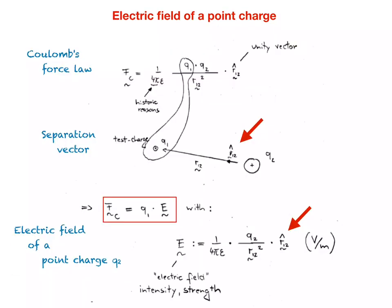Accepting Coulomb's law as experimentally proven, one can derive the electric field of a point charge. It requires a simple redefinition of the two charges: considering one — in this case Q2 — as the source charge, and Q1 as a test charge which probes the electric field created by the source charge Q2.